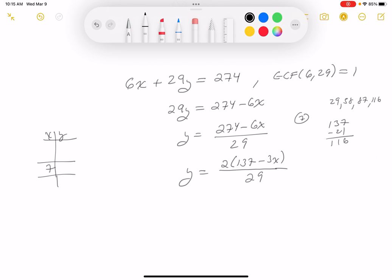Let's go through that. What do you get? You get y equals 2. Let's see, 137 minus 21 is 116. Divide by 29. 29 goes into 116 four times, so we get 8.